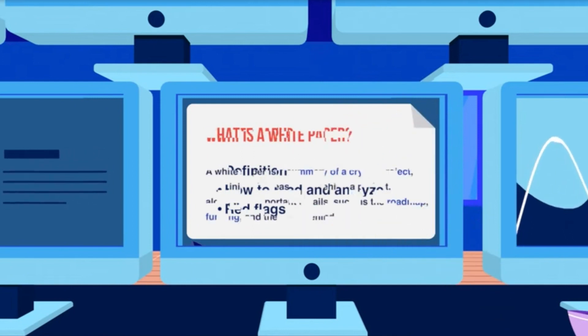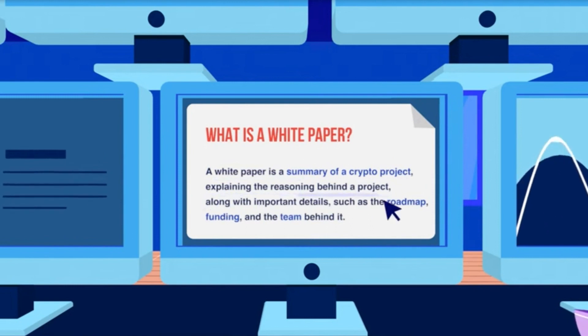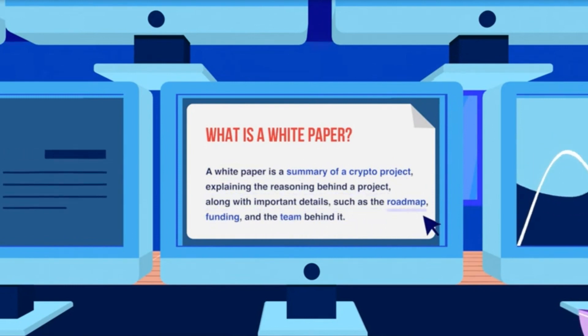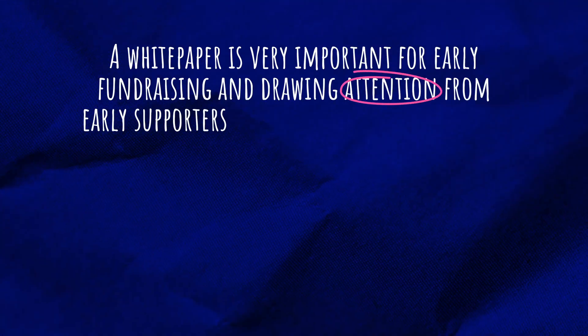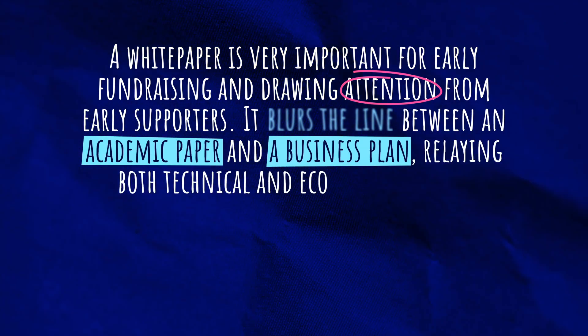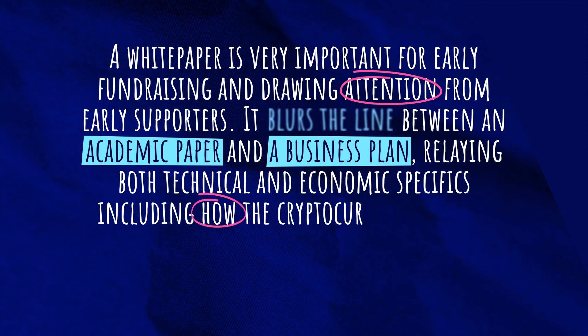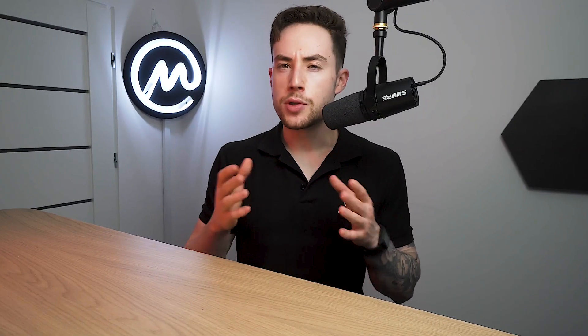Let's talk about the white paper. A founder will usually create and publish a crypto white paper before launching a cryptocurrency. It's basically a detailed technical document that explains what the crypto project is trying to achieve and how. A white paper is very important for early fundraising and drawing attention from early supporters. It blurs the line between an academic paper and a business plan, relaying both technical and economic specifics, including how the cryptocurrency aims to meet a specific need, solve an existing problem, and improve our lives. White papers should also provide insight into the crypto's tokenomics and roadmap, and should be easy to understand while offering technical explanations of the project's competence.